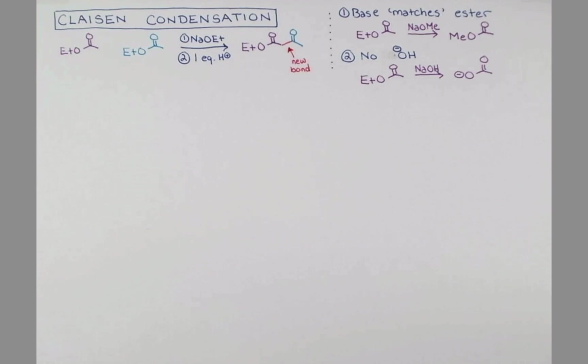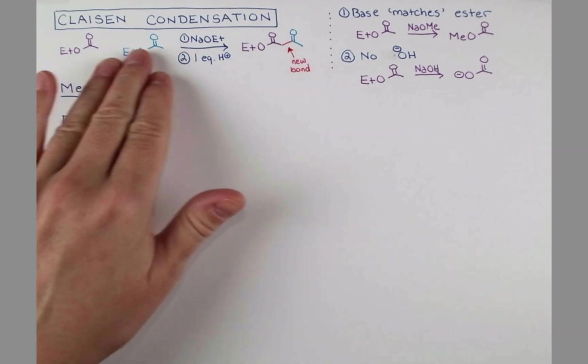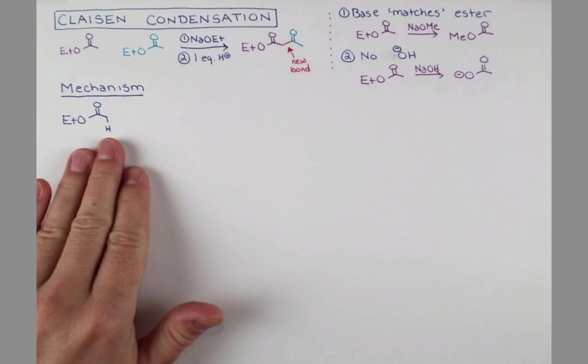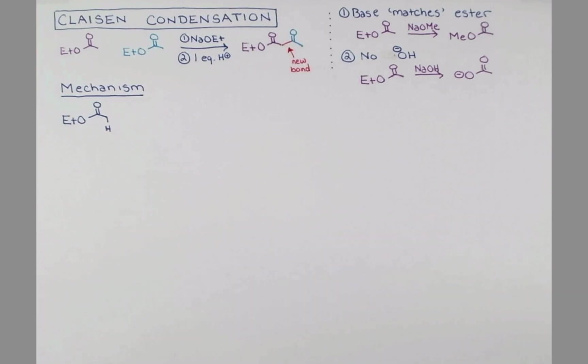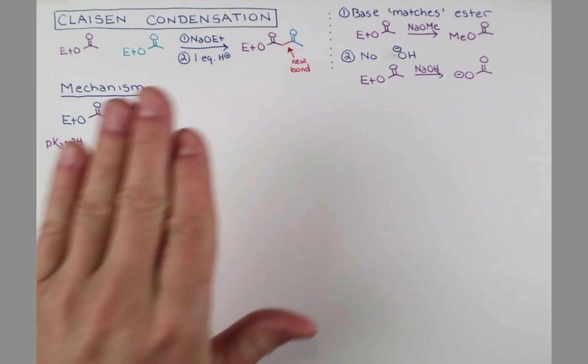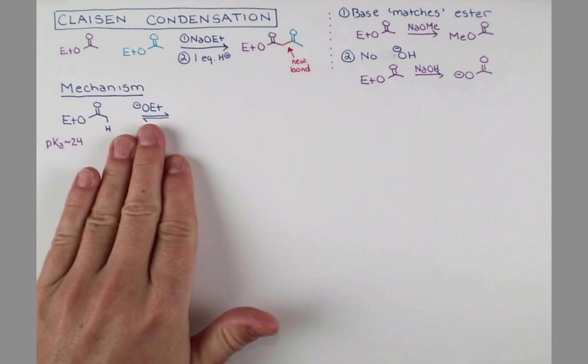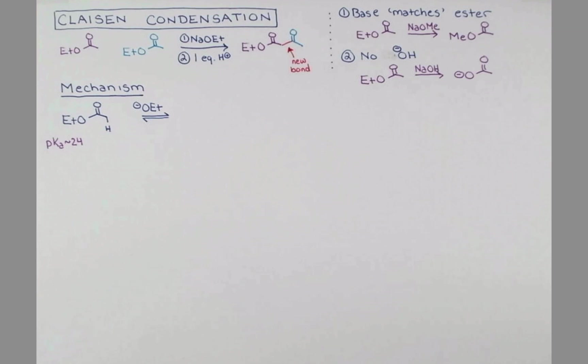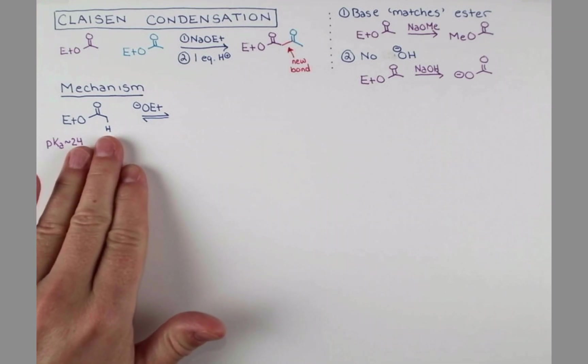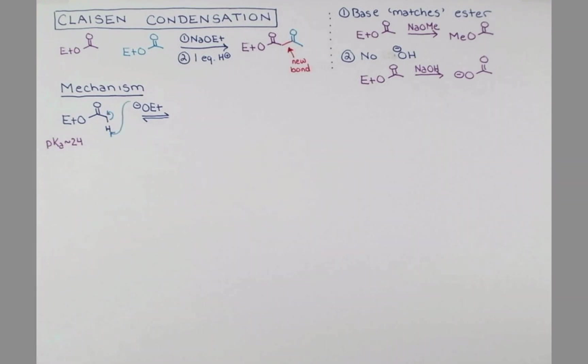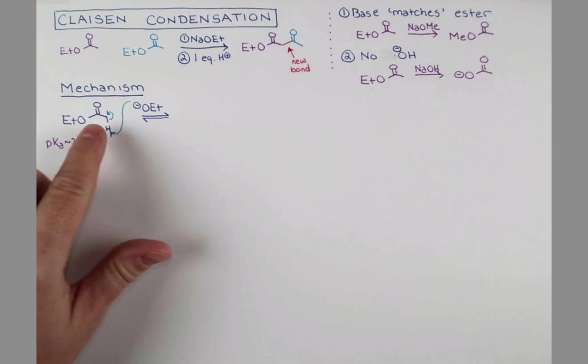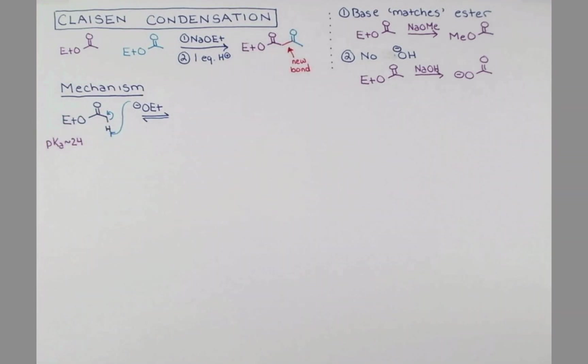Alright, let's take a look at this mechanism. So I've redrawn our ester to show this proton here. This proton is a bit acidic. It has a pKa of around 24. Now I'm going to treat this with sodium ethoxide. I'll treat the sodium as a spectator ion and just show our OET minus. This will deprotonate this proton, forming an enolate.